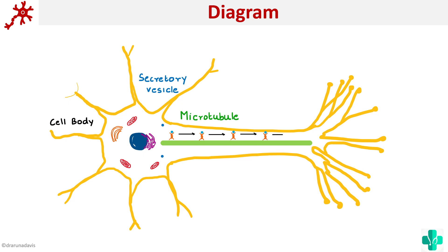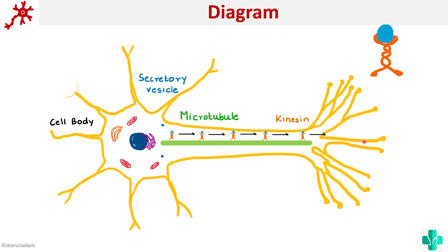You can see that this is the kinesin which transports this secretory molecule, and it is transported from the soma to the other parts of the axon.